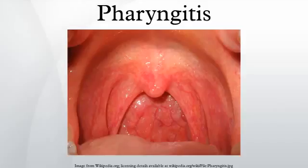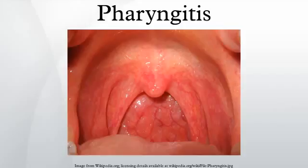If the inflammation includes tonsillitis, it is called pharyngotonsillitis. Another sub-classification is nasopharyngitis. The majority of cases are due to an infectious organism acquired from close contact with an infected individual. Infectious causes comprise about 40–80% of all infectious cases and can be a feature of many different types of viral infections.